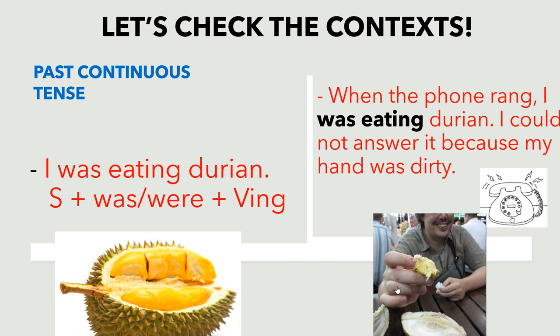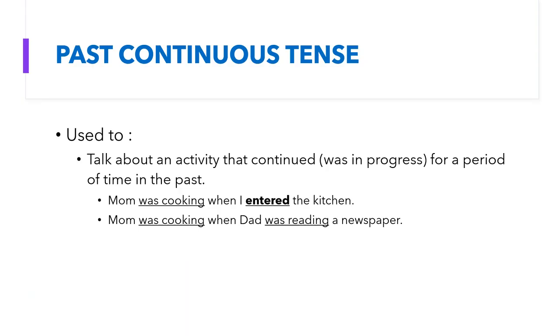Past continuous tense: 'I was eating durian.' Context: 'When the phone rang, I was eating durian. I could not answer it because my hand was dirty.' Past continuous tense can be used to talk about an activity that was in progress for a period of time in the past. For example, 'mom was cooking when I entered the kitchen' — an activity was already going on when I entered, so we use past continuous tense.